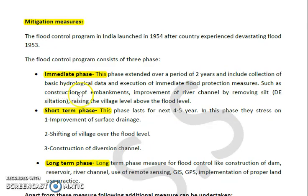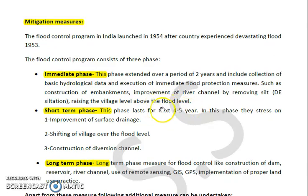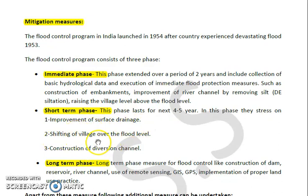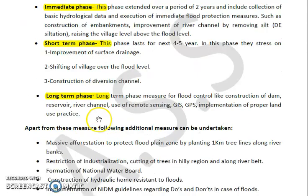The immediate phase focused on protection measures such as construction of embankments, improvement of river channels through desilting, and raising village levels above flood levels. The next phase was the short-term phase, lasting four to five years, which stressed on improvement of surface drainage, shifting of villages above flood level, and construction of diversion channels.